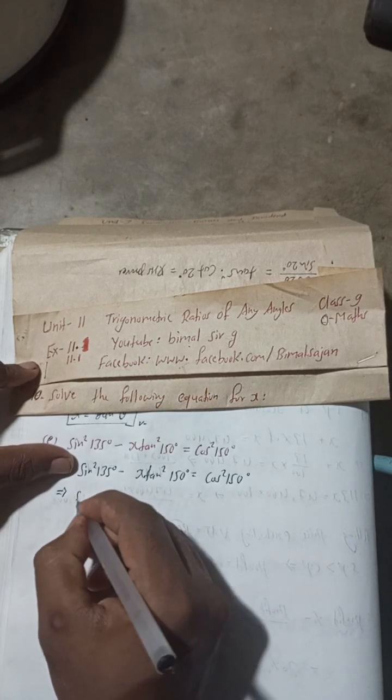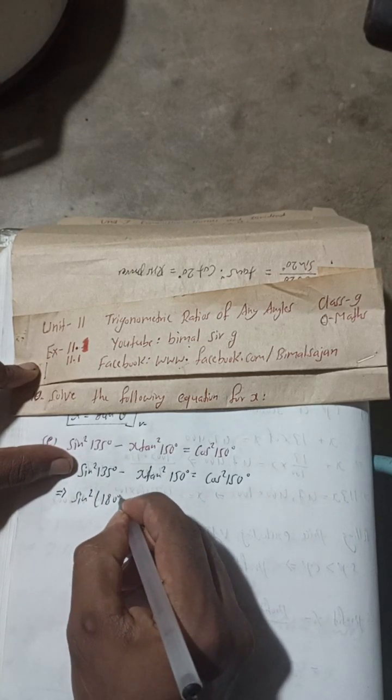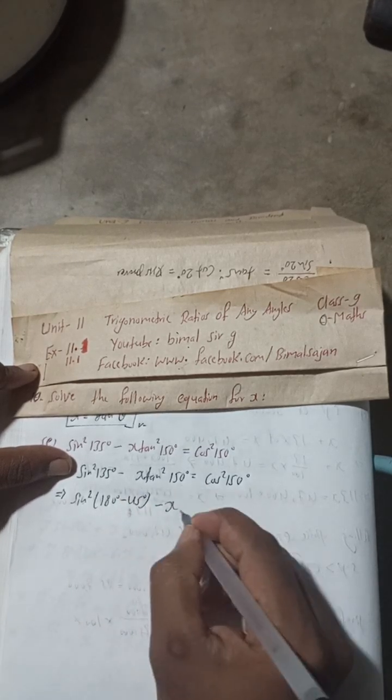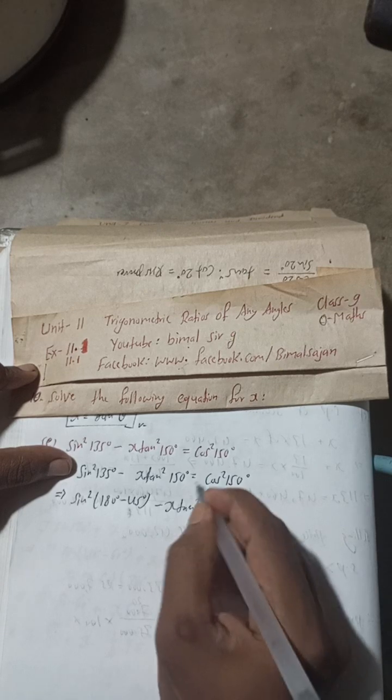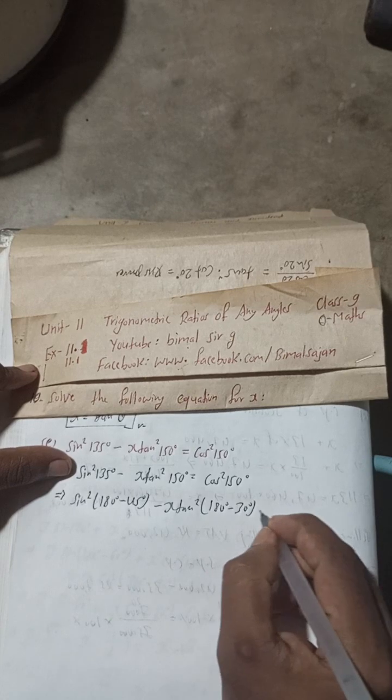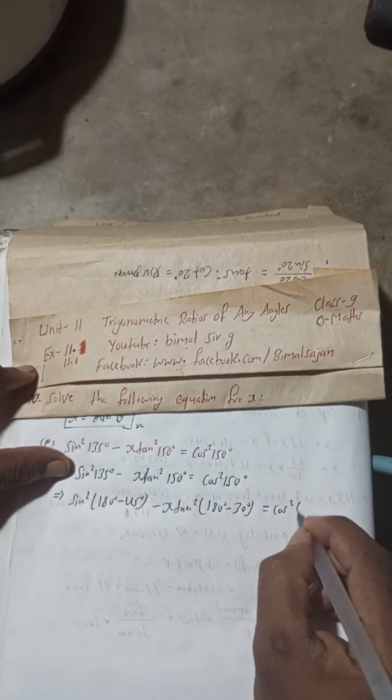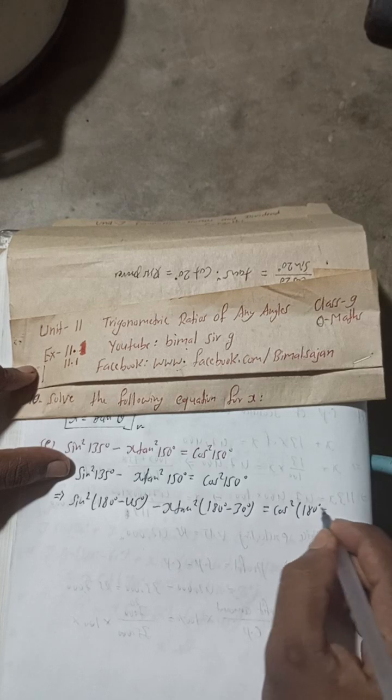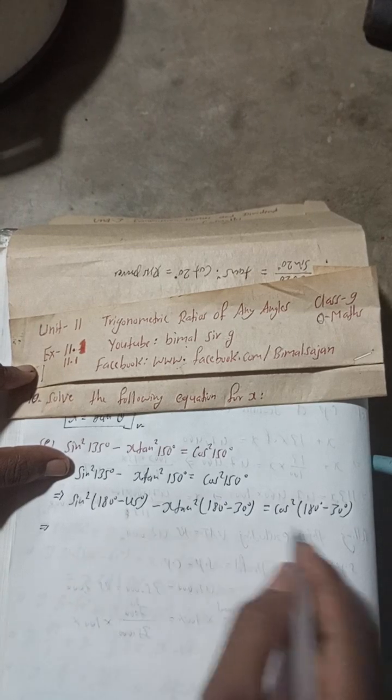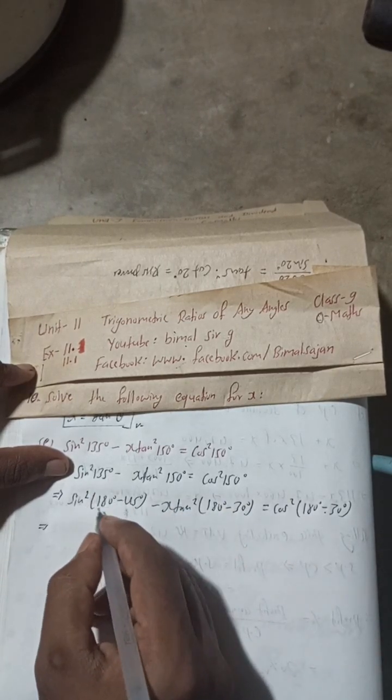Now, this sin²135° can be written as sin²(180° - 45°) - x. tan²150° can be written as tan²(180° - 30°). This is equal to cos²150°, which can be written as cos²(180° - 30°).